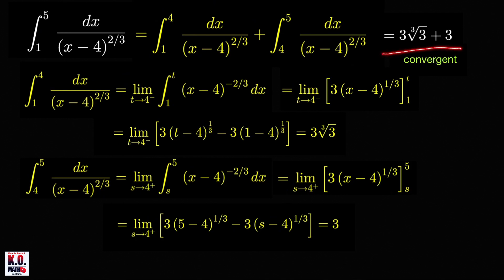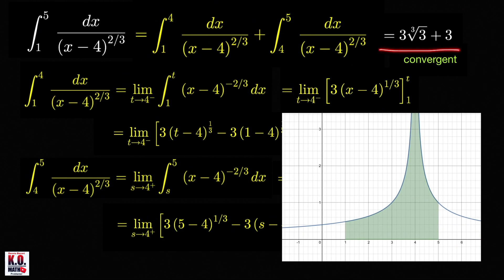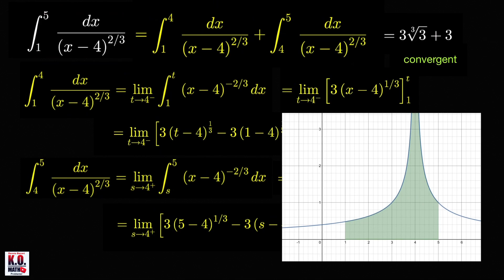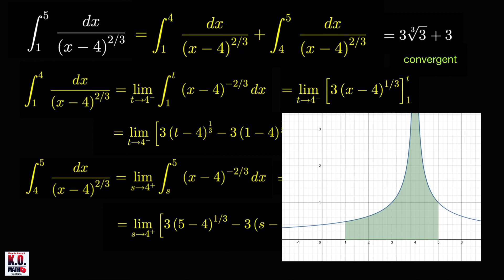The value 3∛3 + 3 represents the area of the region below the curve over the interval 1 to 5. Because this region has a finite area, the improper integral is convergent. Now, do we really have to evaluate these improper integrals using limits? Can't we just apply the fundamental theorem of calculus even if the integrand is not continuous on the closed interval 1 to 5? Note that a condition for using the second fundamental theorem of calculus is that the integrand must be continuous on the closed interval. If we don't satisfy that condition, we may get an incorrect answer.